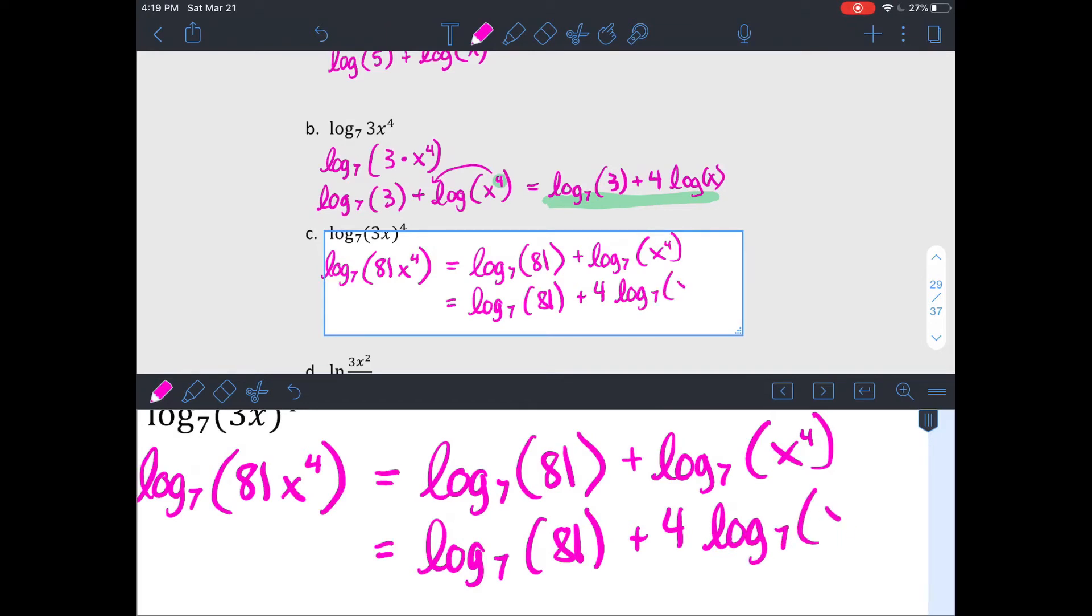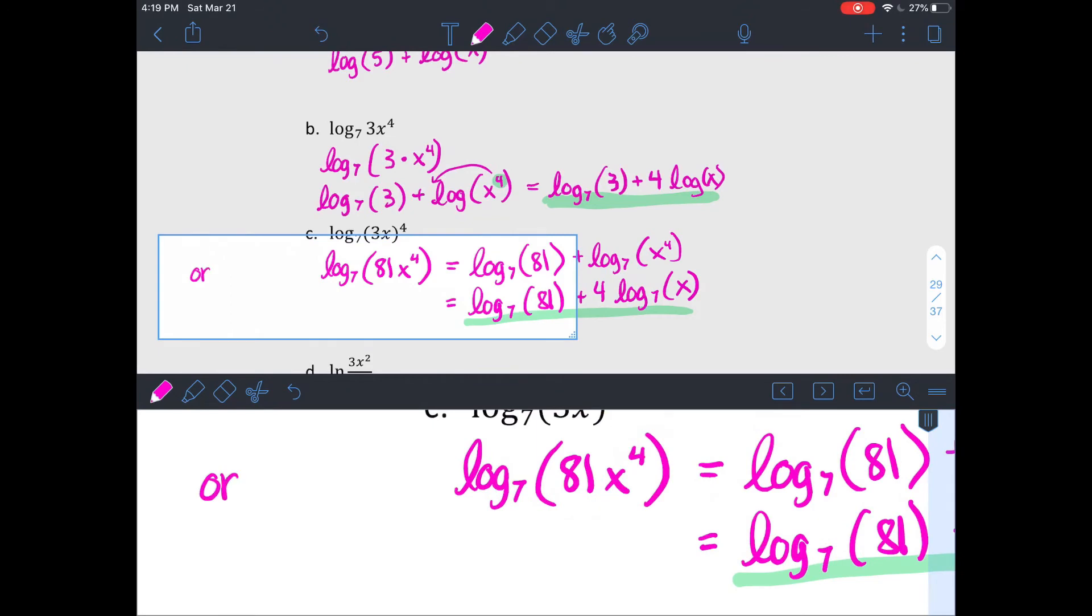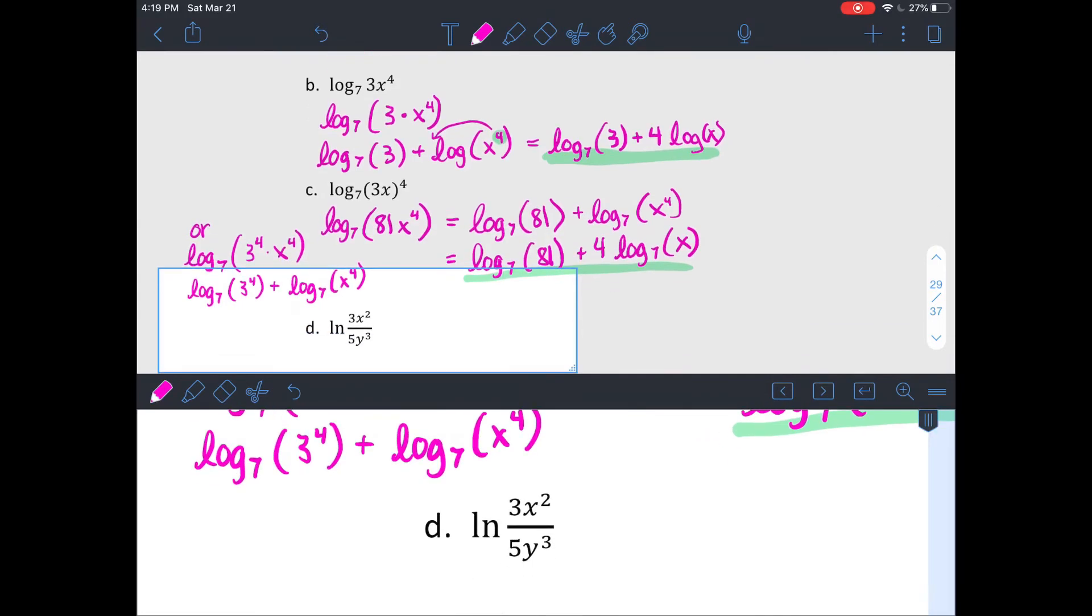There's an alternate way that you could do this one. You could instead go ahead and at the beginning just leave it as 3 to the 4th and x to the 4th. And then end up bringing the 4 out in front of each of them when you expand it so that you end up with 4 log base 7 of 3 plus 4 log base 7 of x, which is also okay.